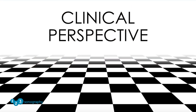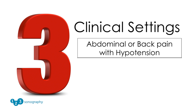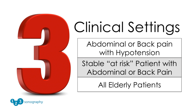Now let's put this information into a clinical strategy for taking care of your patients. There are three clinical settings in which ultrasound of the abdominal aorta could be performed: a patient with abdominal and/or back pain with hypotension, a stable at-risk patient with abdominal and/or back pain, and ultrasound used as a screening test in every elderly patient, particularly those with vascular disease elsewhere.